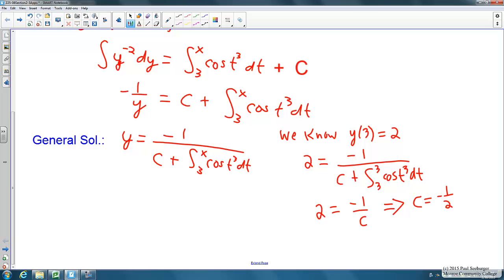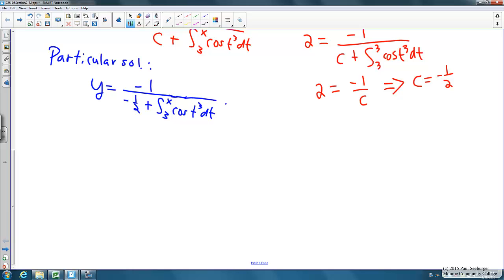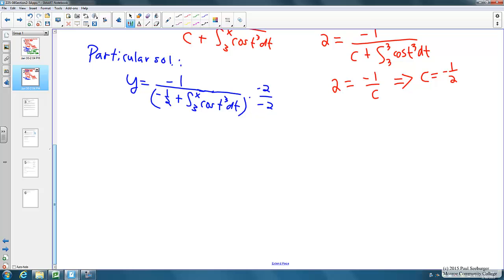We can plug this in to get our solution. Our particular solution that we're looking for here that satisfies the differential equation and the initial condition is that y is equal to negative 1 over negative 1 half plus the integral from 3 to x of cosine of t cubed dt. This could be simplified a little bit. We want to make it look a little nicer. We can multiply through by negative 2 over negative 2. So multiplying through by negative 2 over negative 2 to make this look nicer, we get positive 2 on top. On the bottom we get negative 2 times the negative 1 half which is positive 1 minus 2 times the integral from 3 to x cosine of t cubed dt.